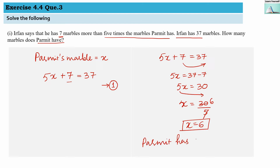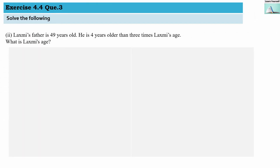Question 2: Lakshmi's father is 49 years old. He is 4 years older than 3 times Lakshmi's age. What is Lakshmi's age? Let us first assume Lakshmi's age is x years. Lakshmi's father is 49 years old and he is 4 years older than 3 times Lakshmi's age.